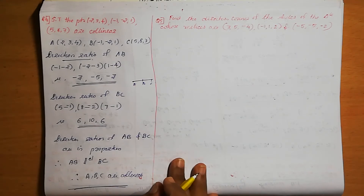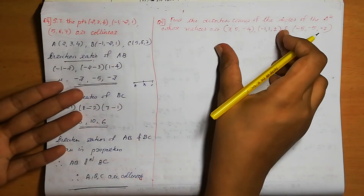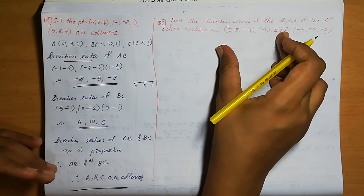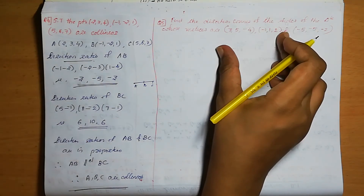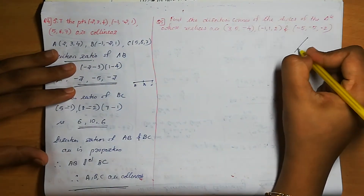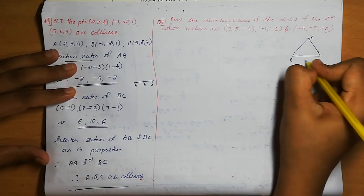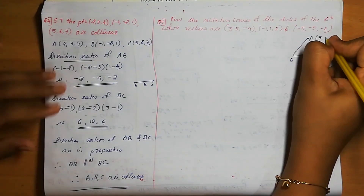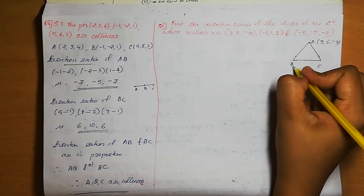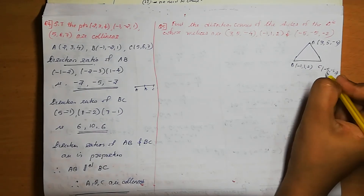Question number 5: Find the direction cosines of the sides of a triangle whose vertices are A(3, 5, minus 4), B(minus 1, 1, 2), and C(minus 5, minus 5, 2). We need to find the direction cosines for sides AB, BC, and CA.